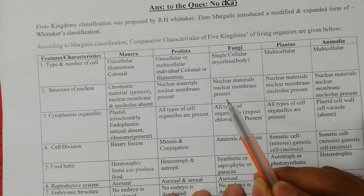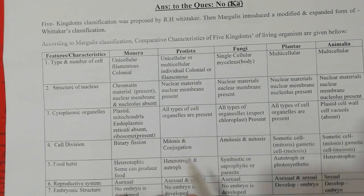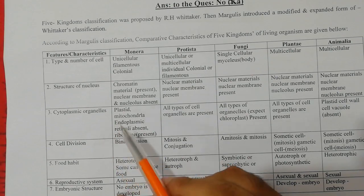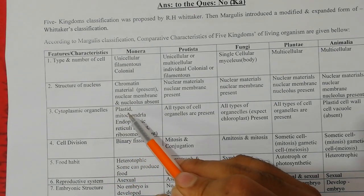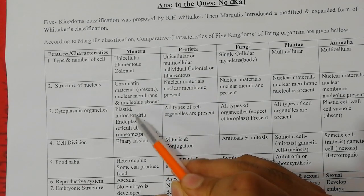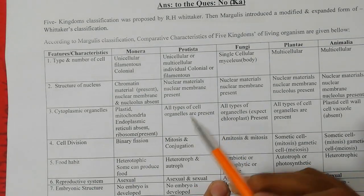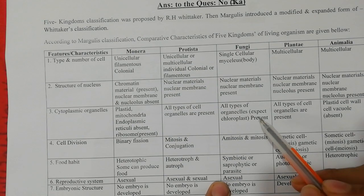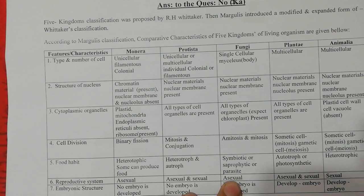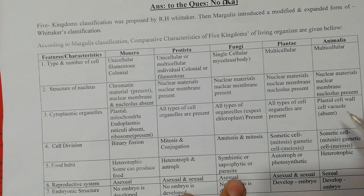For Fungi, Plantae, and Animalia, the nuclear material and nuclear membrane are the same — the nucleus and nuclear membrane are present. Regarding cytoplasmic organelles: very important organelles like plastids and endoplasmic reticulum are considered. All types of organelles are present in most kingdoms, though plant cells and animal cells differ in some organelles such as plastids.